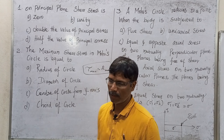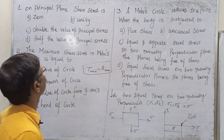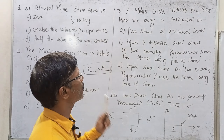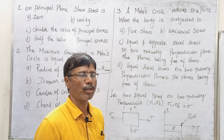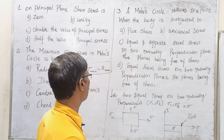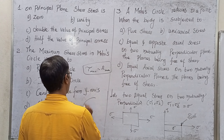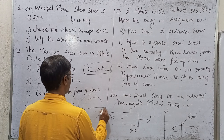This is an important concept in the principal plane. The Mohr's circle exists at both points. Remember, the Mohr's circle is one circle.